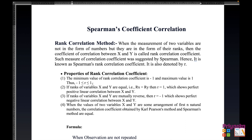Here are some properties. First, the minimum value of rank correlation coefficient is minus 1 and maximum value is 1. Thus the answer will always remain between minus 1 and plus 1, coming as either a positive or negative decimal value.